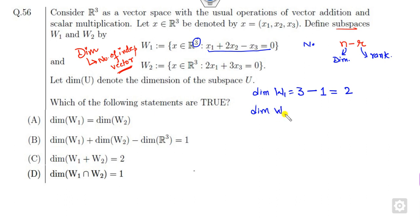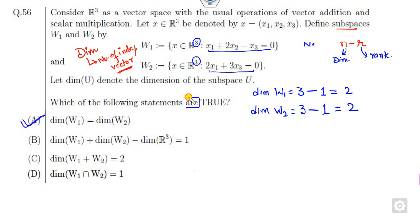Similarly, you can find the dimension of W2. W2 is again 3 minus the rank. There is only one equation, so rank is 1. So dimension of W1 and dimension of W2 are both 2. So the first option is correct. There is more than one correct answer. The dimension of W1 plus W2 is 2 plus 2 equals 4, and the dimension of the full space is 3. So 2 plus 2 minus 3 equals 1, and 4 is also a correct answer.